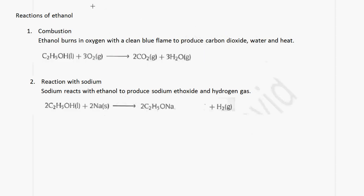We're going to look at the reactions of the members of the alcohol group, and what we're going to use as an example is ethanol, with formula C2H5OH. Ethanol burns in oxygen with a clean blue flame to produce carbon dioxide, water, and heat. The equation is: C2H5OH + 3O2 → 2CO2 + 3H2O.